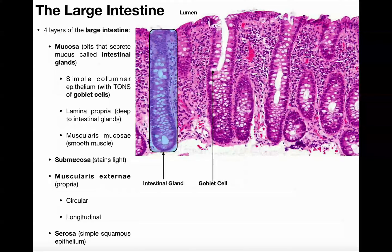Deep to the mucosa, you're going to have a submucosa. The large intestine also has a muscularis externa, which is going to contain circular and longitudinal layers. The deepest layer is going to be the serosa, which is composed of simple squamous epithelium — we're not really going to look at this. So now let's take a look at the large intestine under the microscope, and the key that we're going to look at is the goblet cells.